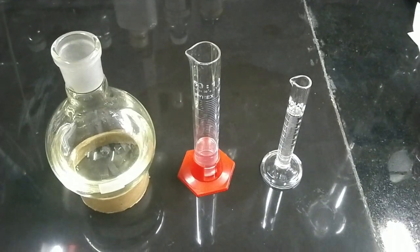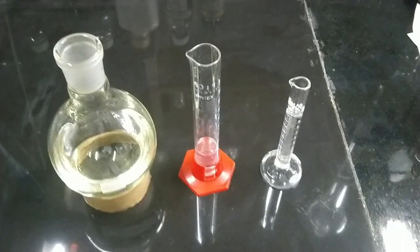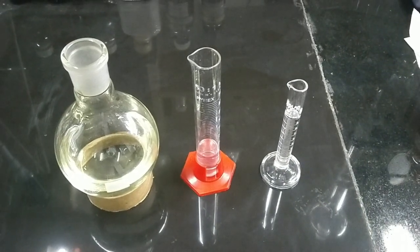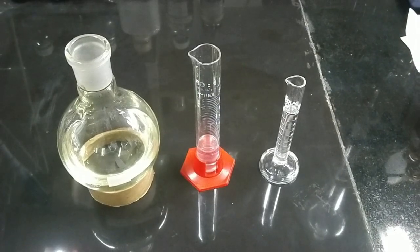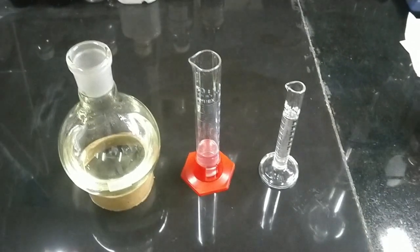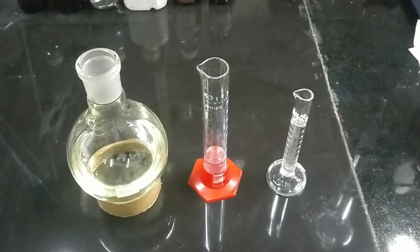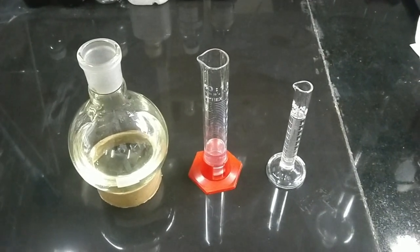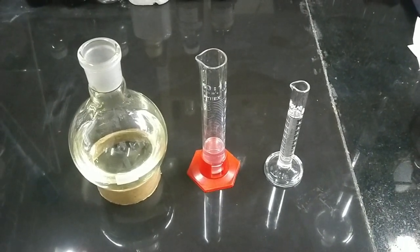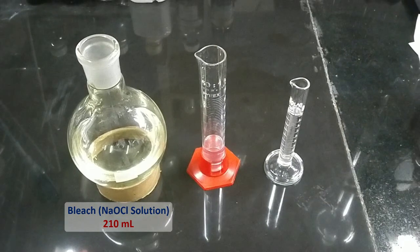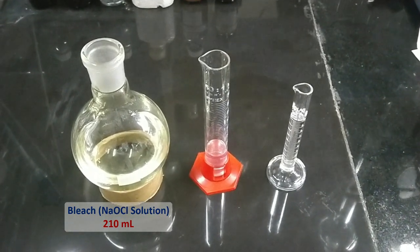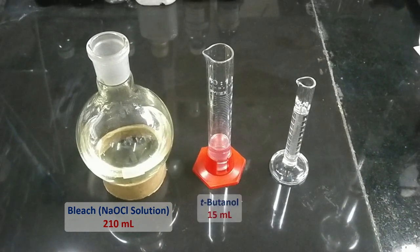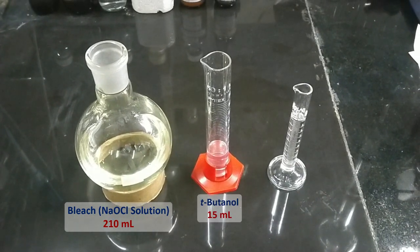Welcome to another video by Mad Chemistry. Today we are going to synthesize tertiary butyl hypochlorite, a chlorination agent. Here I have 210 milliliters of household bleach in my round bottom flask, 15 milliliters of tertiary butanol, and 10 milliliters of acetic acid.